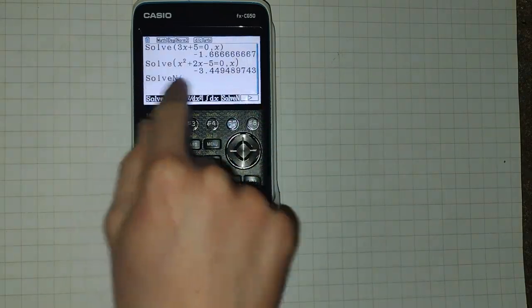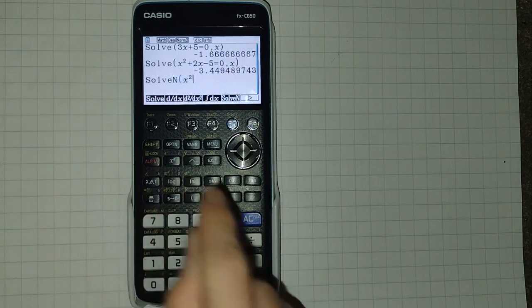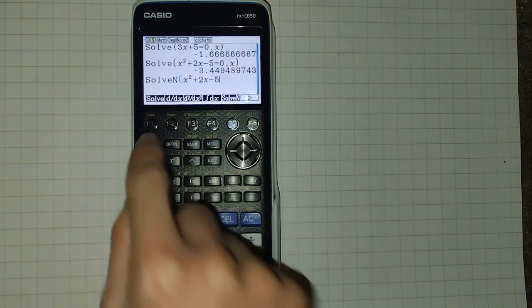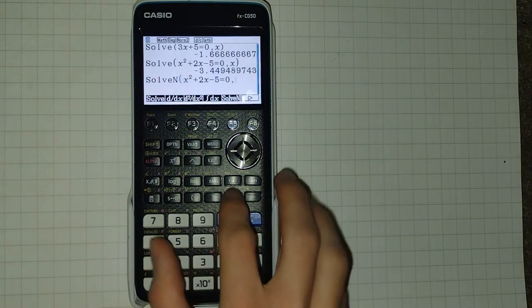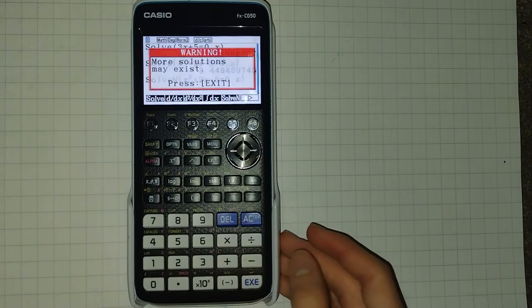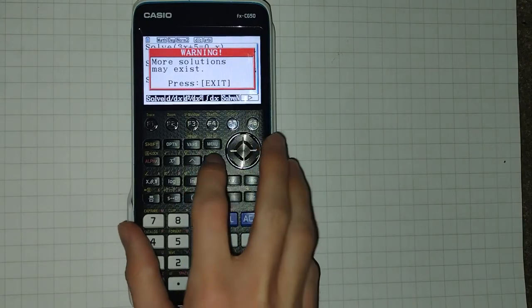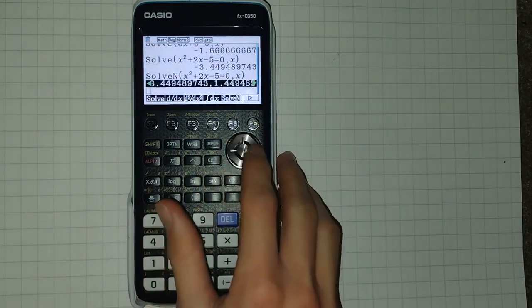For this, we must use solve n, F5. We enter the same equation, and solve for x. You get this warning message, click exit, and we now get our set of both solutions.